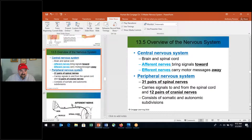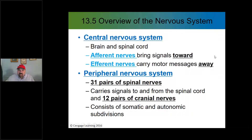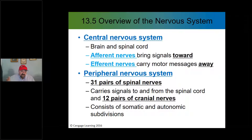Now for new information: afferent and efferent. Dendrites take information to the neuron cell body — similarly, information coming toward the central nervous system is carried by afferent nerves, bringing sensory signals toward the CNS. Efferent nerves carry messages away from the CNS — these are motor output signals going to the musculature and to glands. Afferent and efferent are very important concepts regarding both the central nervous system and individual neurons.